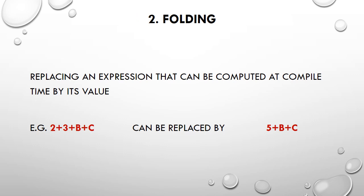Another machine-independent optimization technique is folding. Folding means some expressions can be computed at compile time and replaced by their value. For example, in an expression like 2 + 3 + b + c, where b and c are variables, the sub-expression 2 + 3 can be computed as 5 at compile time. So folding means replacing an expression that can be computed at compile time by its value.